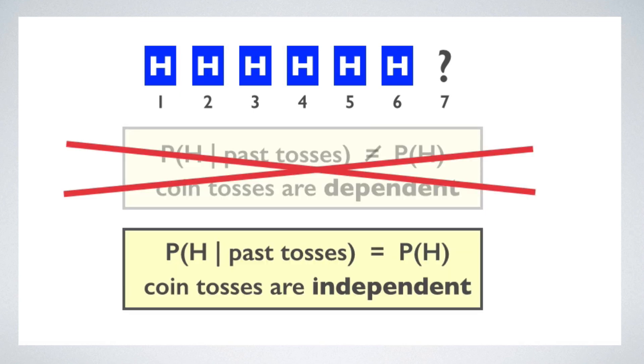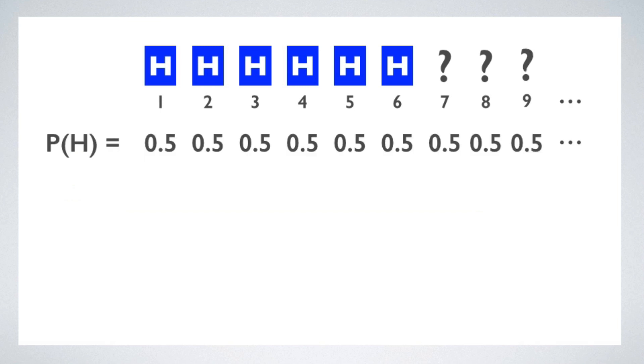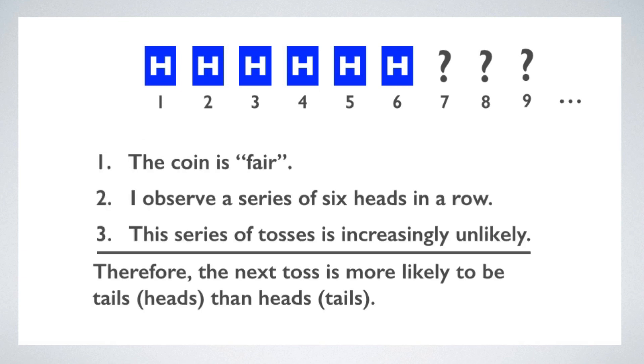In reality, coin tosses are independent events, meaning that the probability of the coin landing heads, given whatever history of past tosses, is the same as the unconditional probability of landing heads. It's always 50%. It's 50% for each toss, no matter how many heads in a row we get. We could get 99 heads in a row. And assuming the coin really is a fair coin, the probability of it landing heads on the hundredth toss is still 50%.